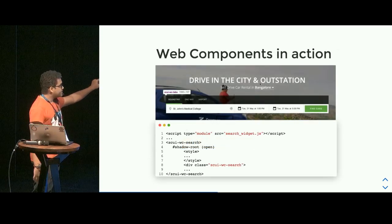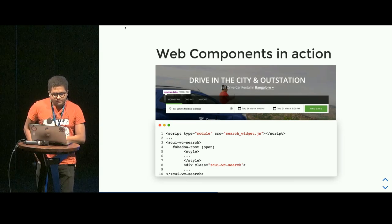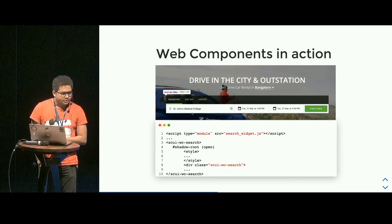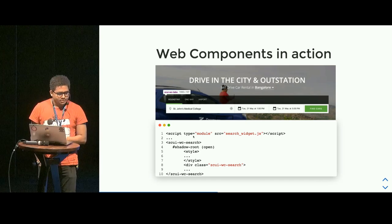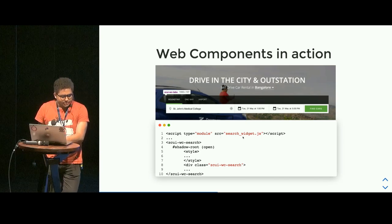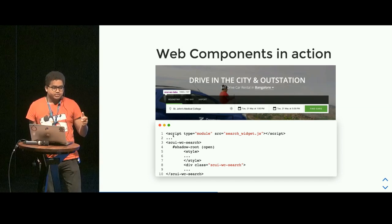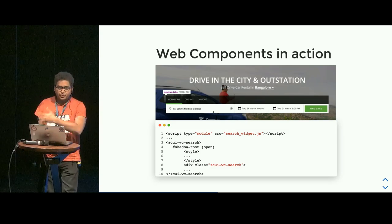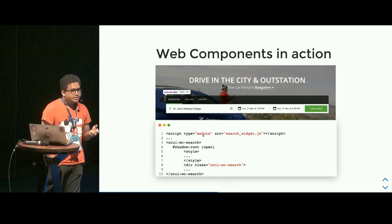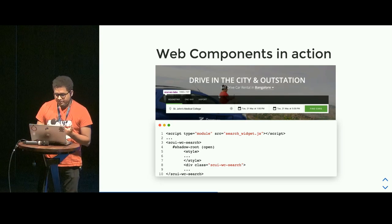Web components in action: as you can see, this is the homepage of zoomcar.com and we are in the process of adopting web components. This whole search bar is actually a single web component. The definition is including a script as a module, giving the path to it, and then defining the markup — that's the reusability part. We have the search widget in multiple pages: one place where we just have HTML and CSS, and a few places where we have Vue. That is when the web component shines — you only have a single component, a simple markup, which takes care of all the implementation details.